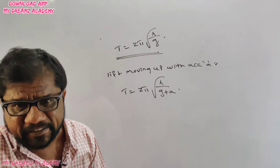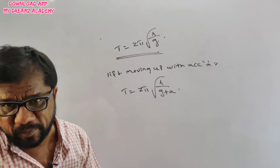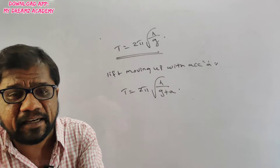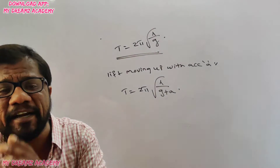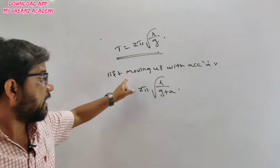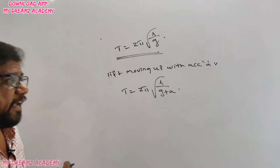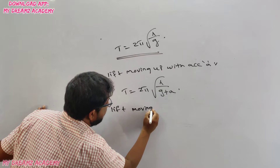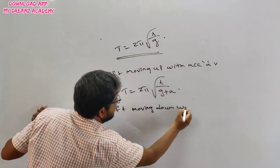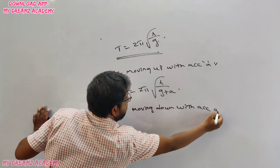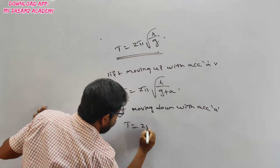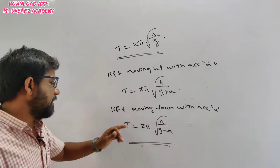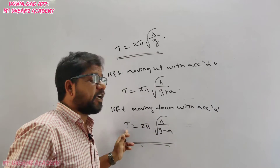When the lift is moving down with acceleration a, the effective acceleration decreases to (g − a), so the time period formula becomes T = 2π√(l/(g−a)). Because acceleration decreases, the time period increases. This concept may be asked either theoretically or as a numerical problem.